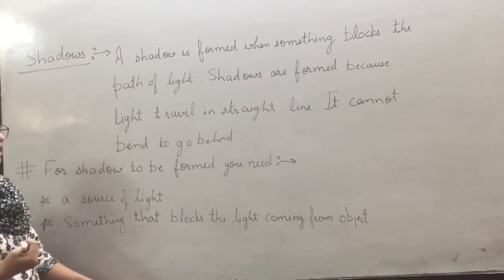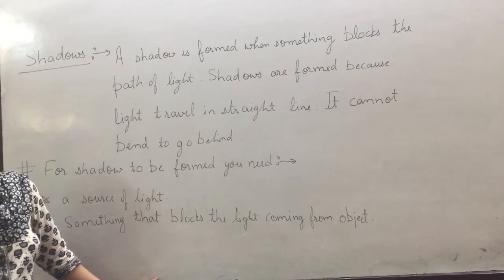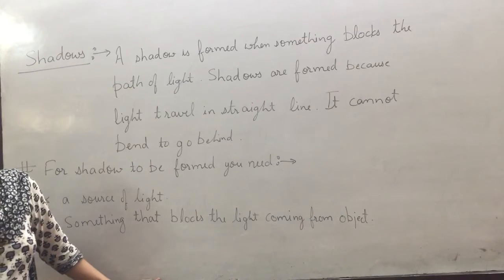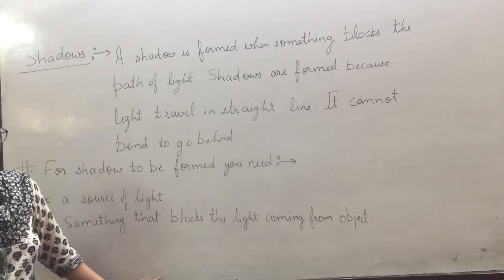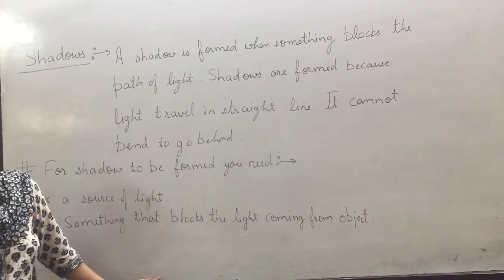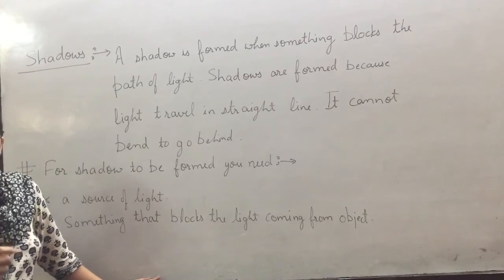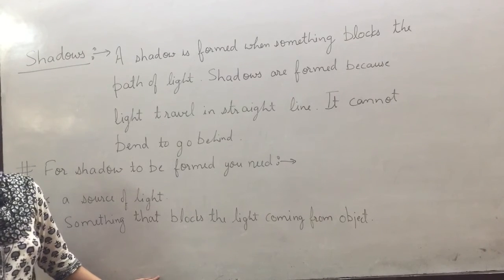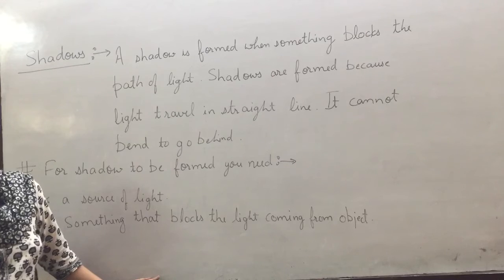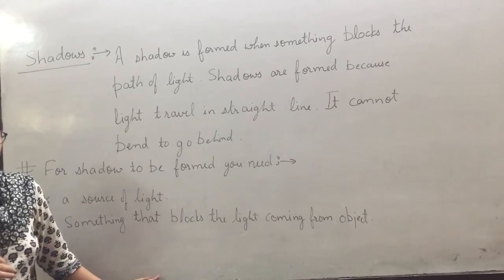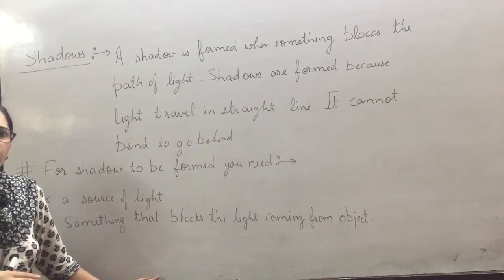If you observe in the morning or evening, you can see the shadow on one side. In the afternoon, it is a small shadow because the sun is overhead. In the evening, the shadow is formed on another side.